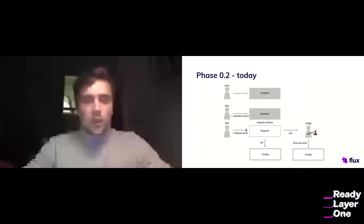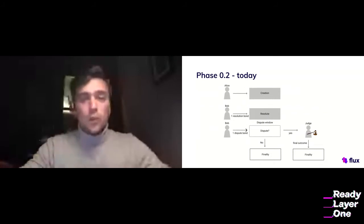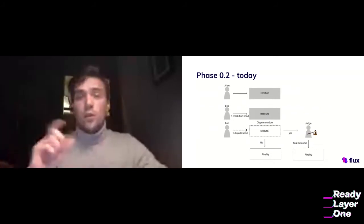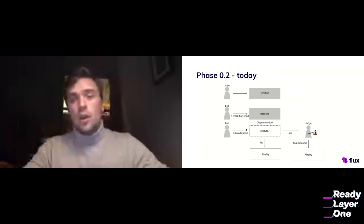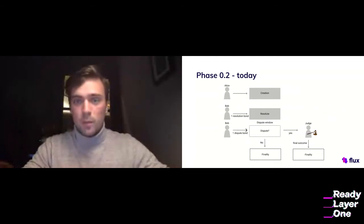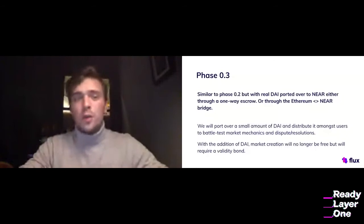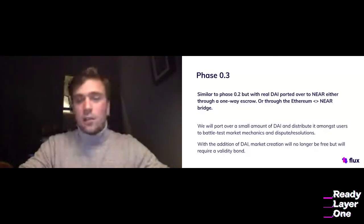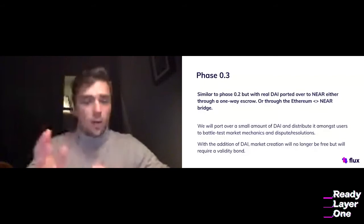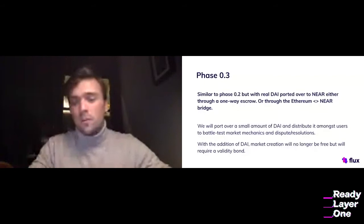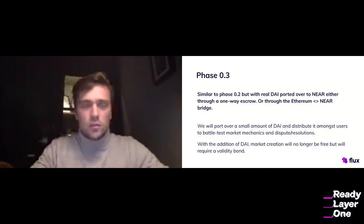Phase 0.3 is very similar to phase 0.2, but there's actually real DAI ported over to NEAR, either through a one-way escrow or through the NEAR to Ethereum bridge — we're heavily leaning towards the latter. We'll port over a small amount of DAI distributed amongst active participants on Flux protocol, so we can test our dispute resolution mechanisms when there's some monetary value involved. From this point on, market creation will no longer be free, but there will be a validity bond added in as well.